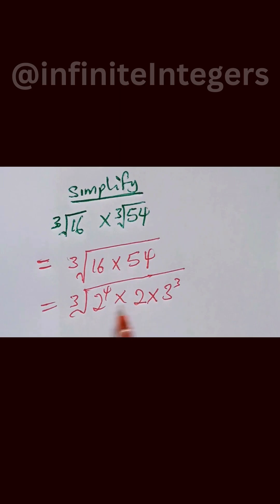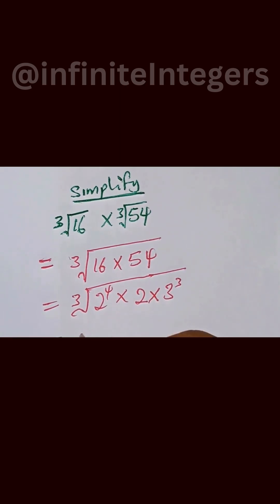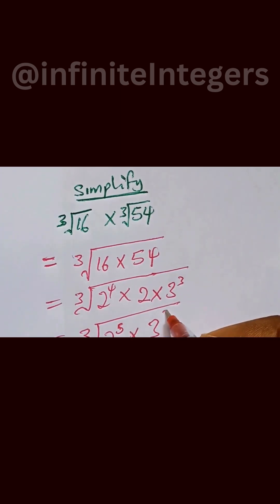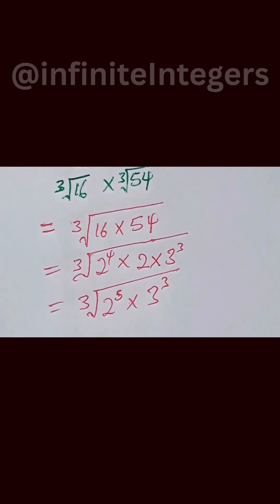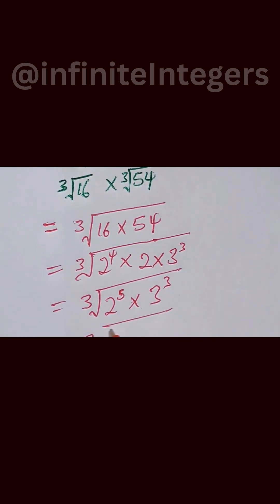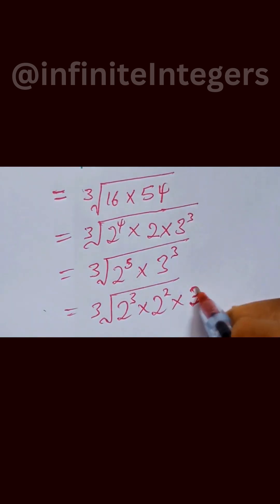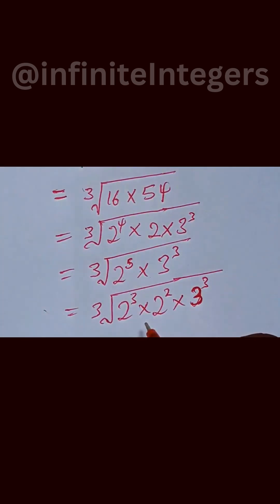Combining these together, we can write this as cube root of 2 raised to power 5 multiplied by 3 raised to power 3. We can then split this back as cube root of 2 raised to power 3, multiplied by 2 raised to power 2, multiplied by 3 raised to power 3.